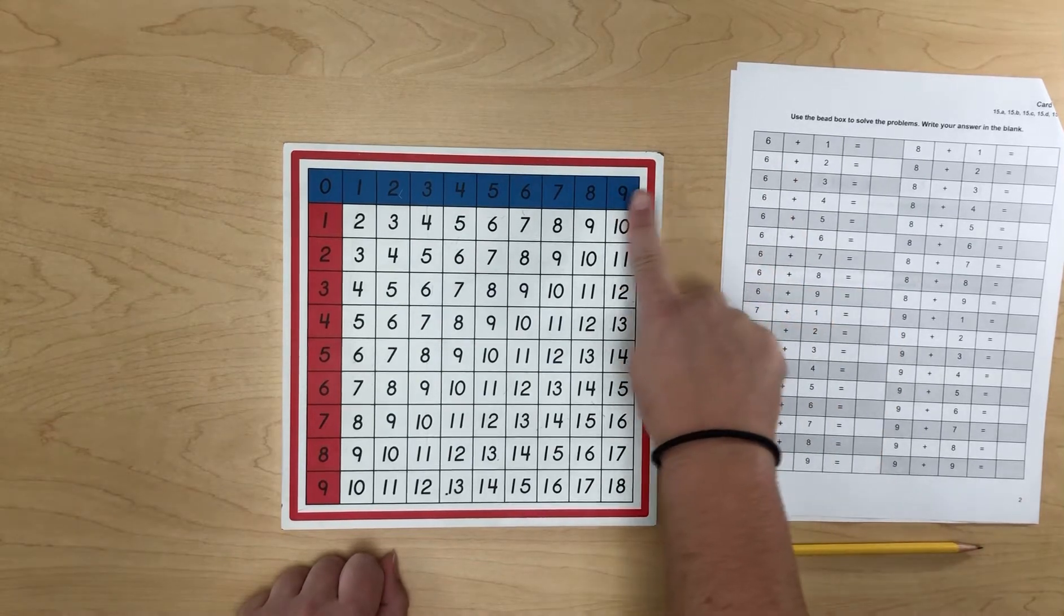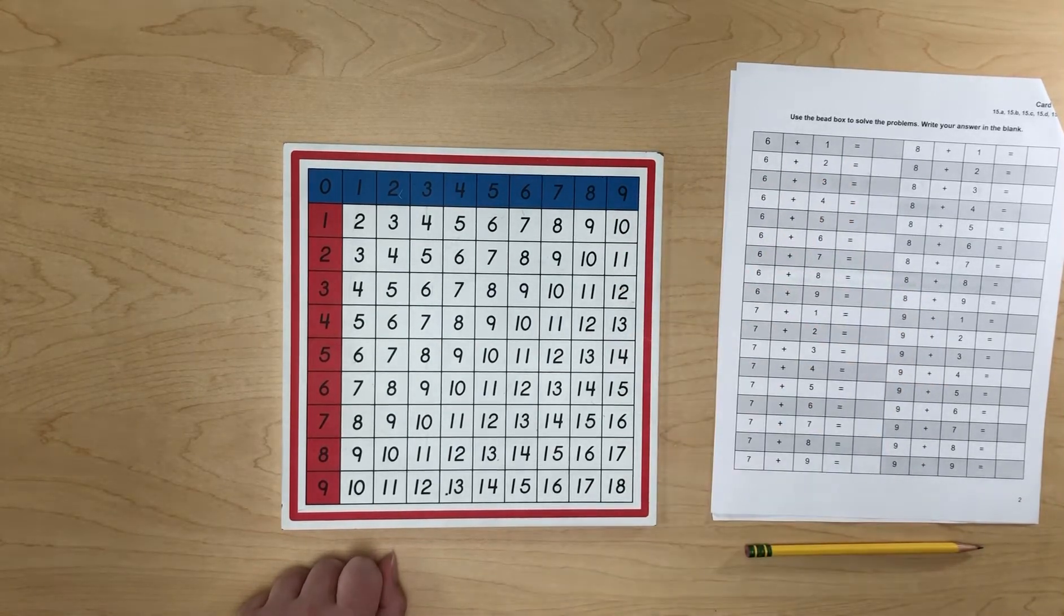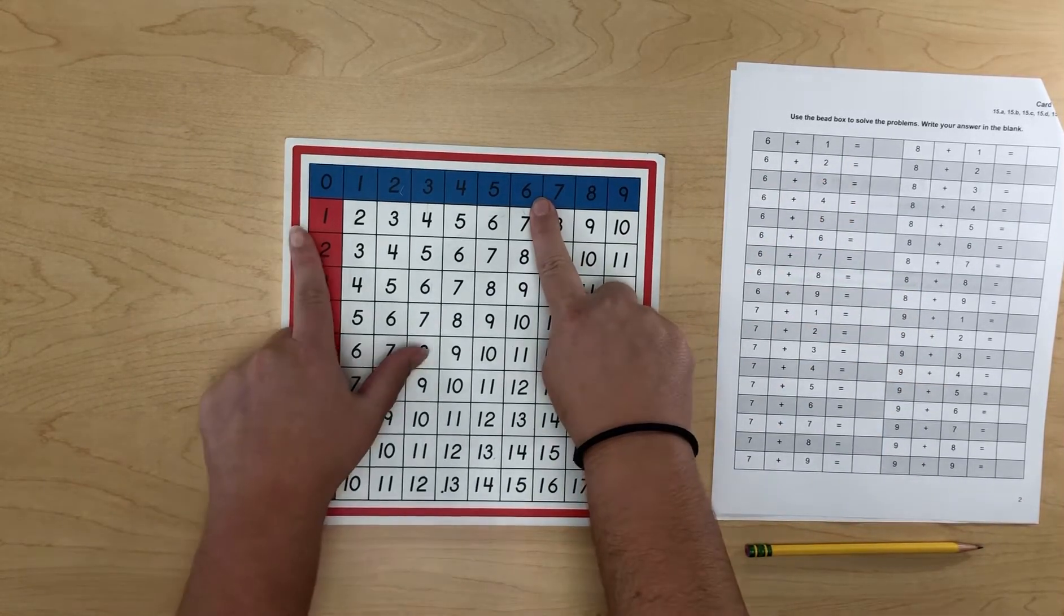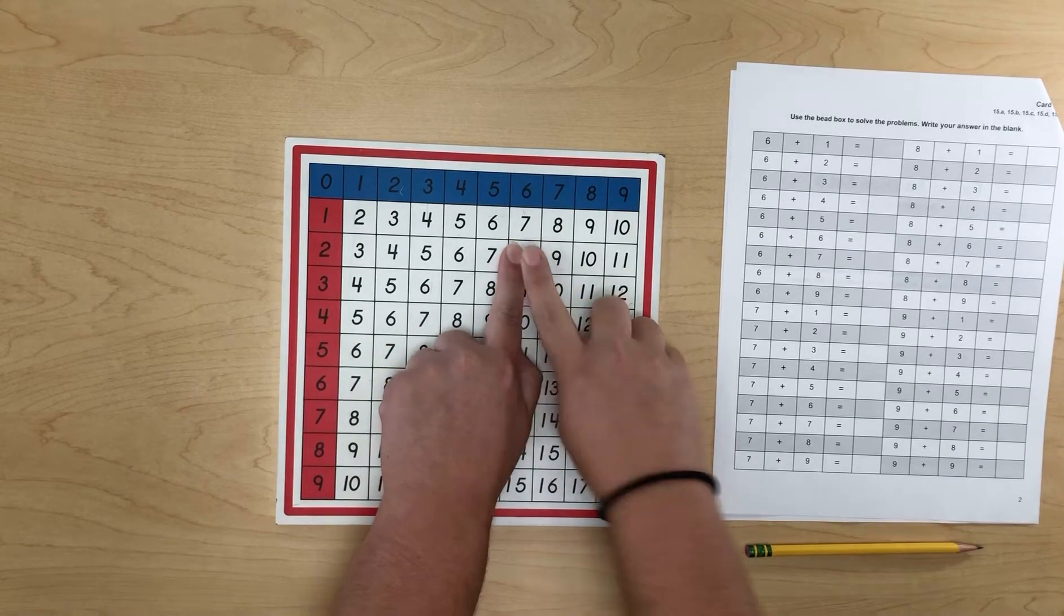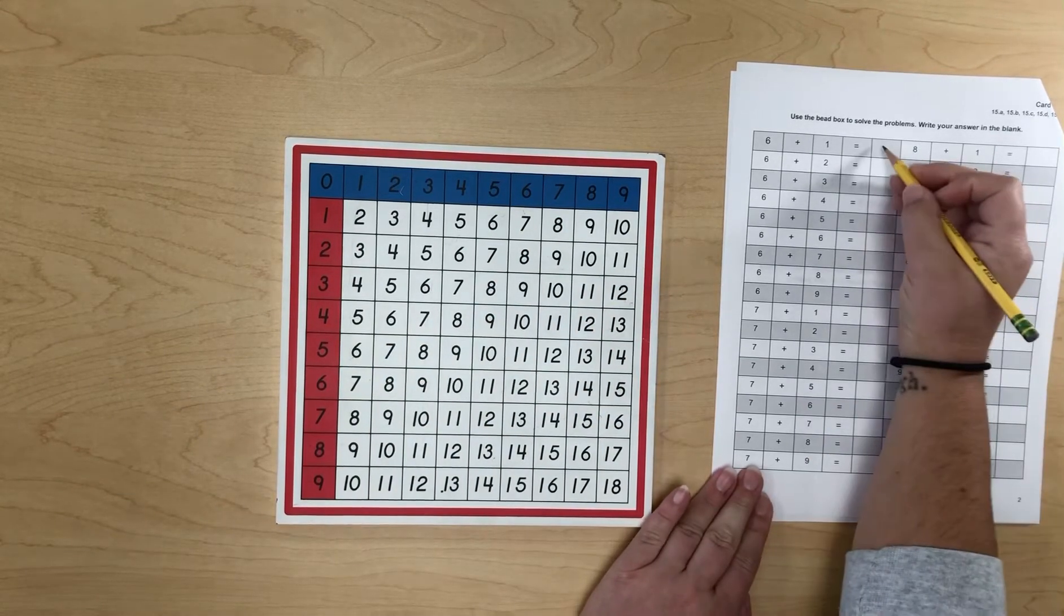So just like before, I have 6 plus 1 equals. So I'm gonna go to 6 plus 1, trace my fingers. I see that it equals 7. So I'm going to write 7 on the line.